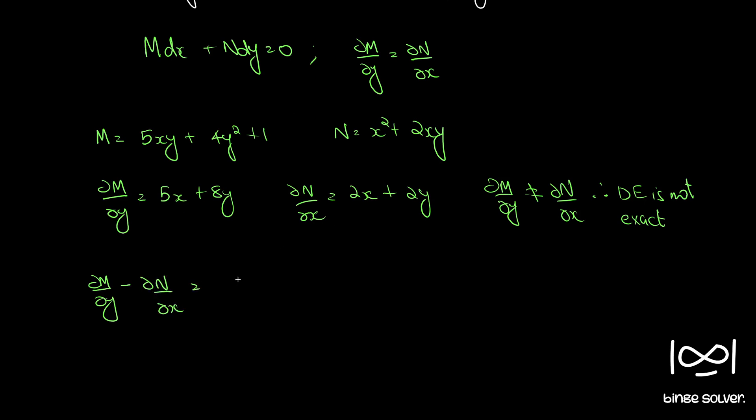5x minus 2x is 3x. 8y minus 2y is 6y, 3x plus 6y. If you take 3 outside, x plus 2y.